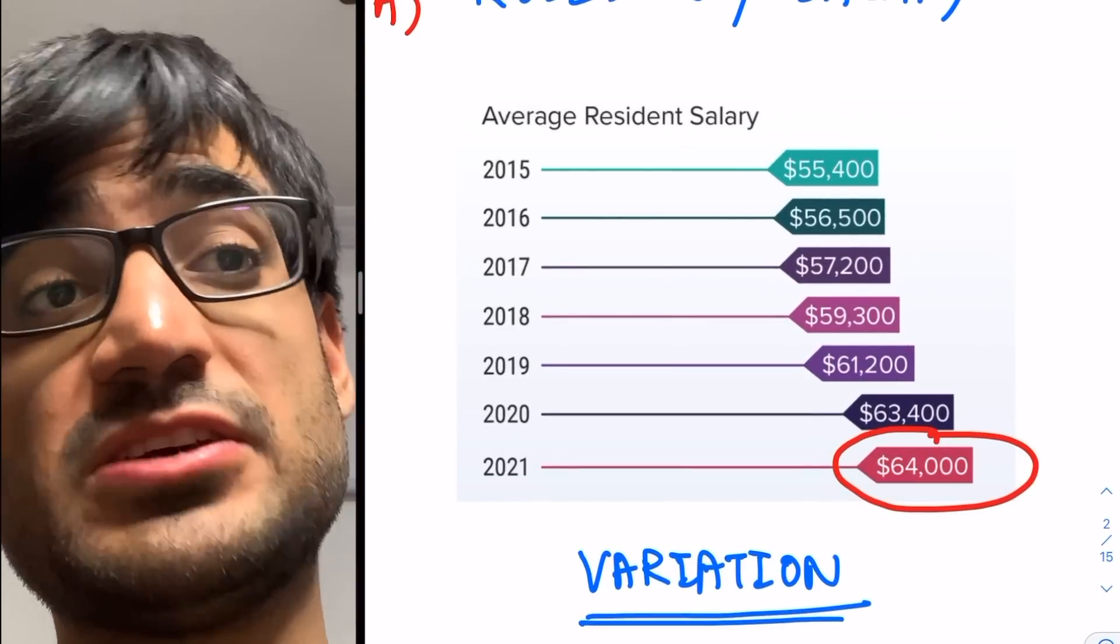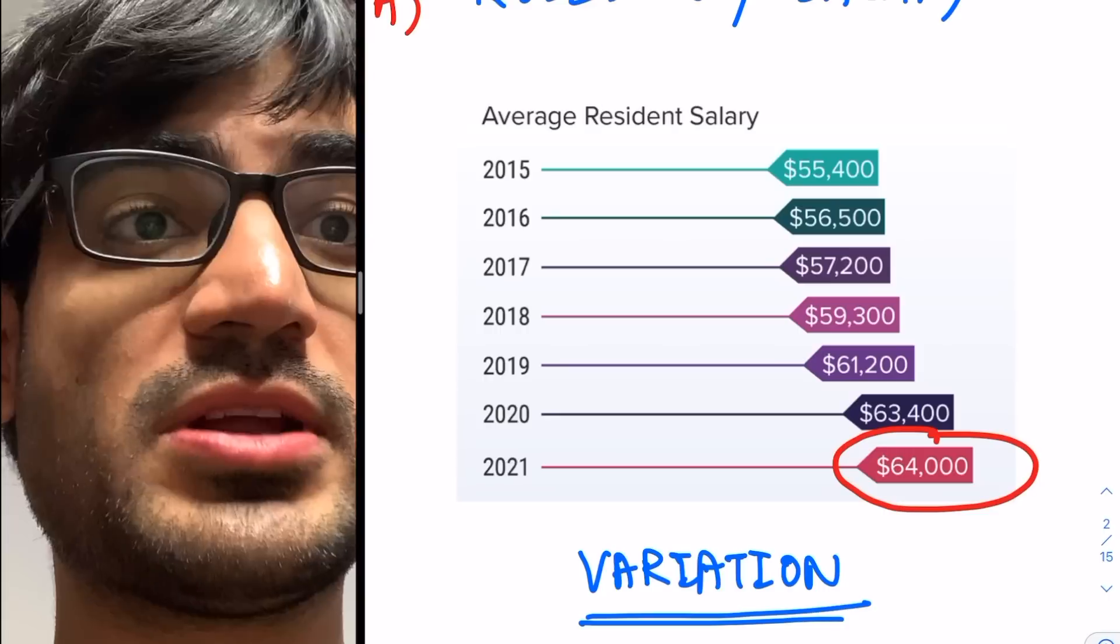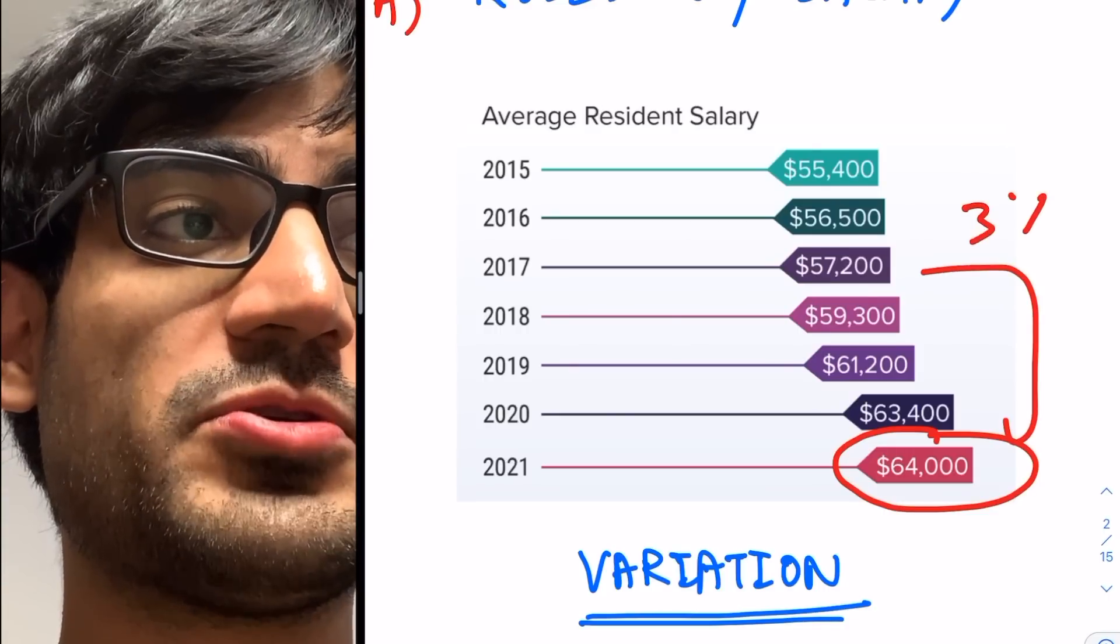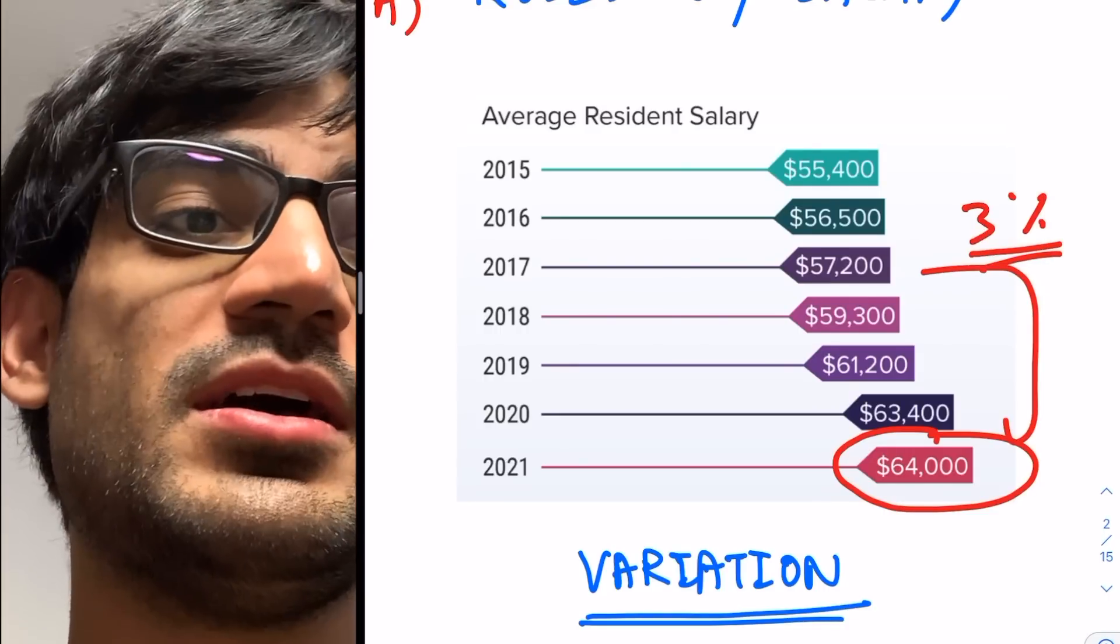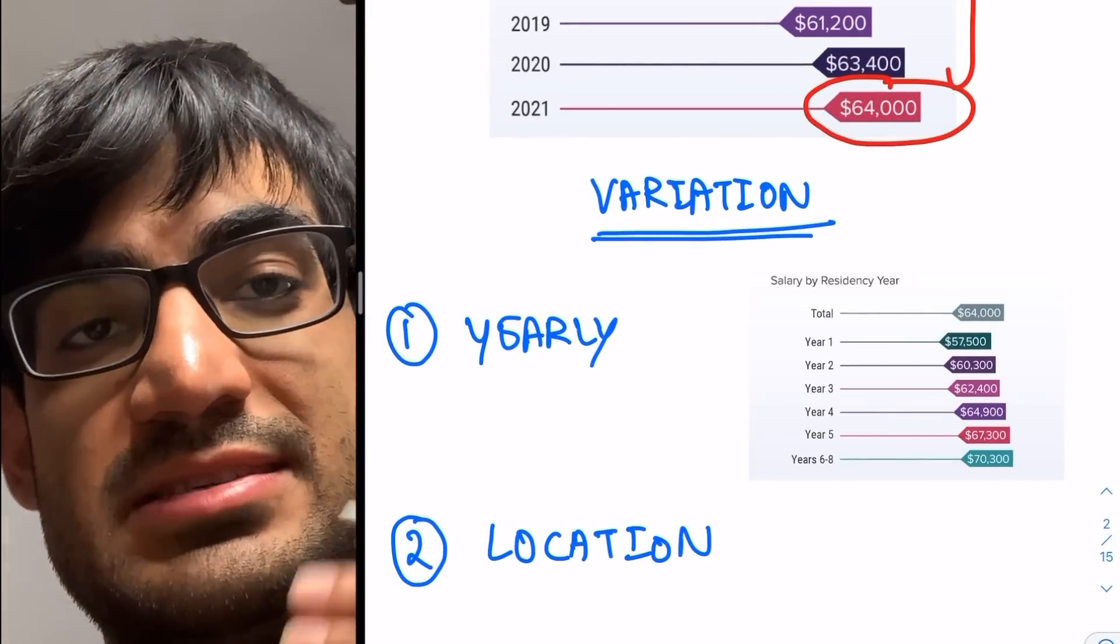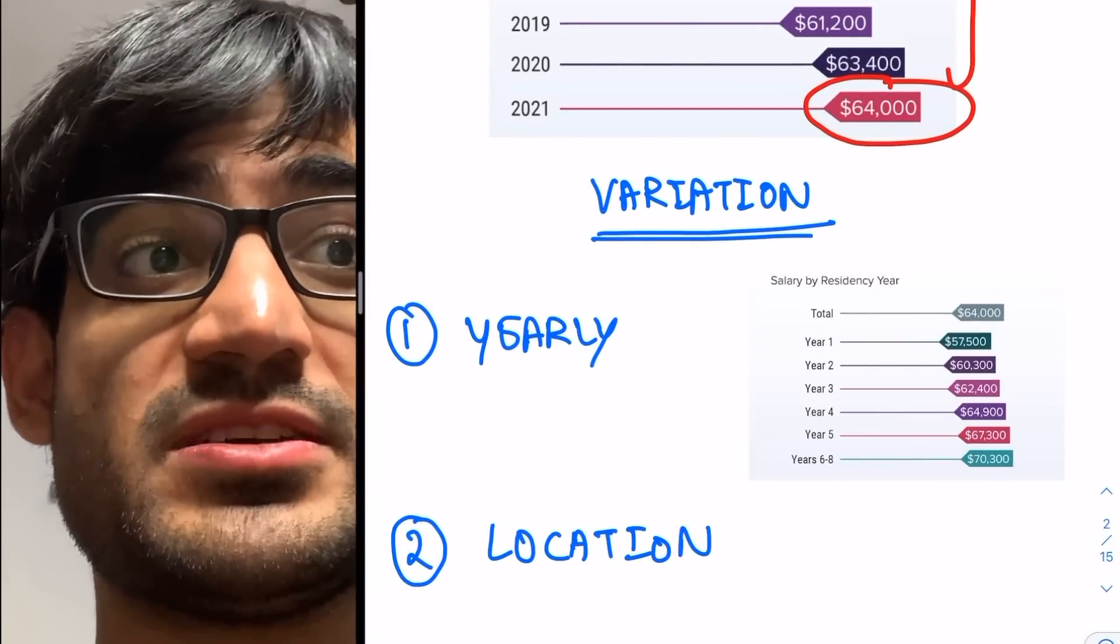The average resident salary has been increasing by about 3% if you look from 2017, and it will keep increasing like this, probably, hopefully. And the variation, the residency salary, this is the average estimate, $64,000.